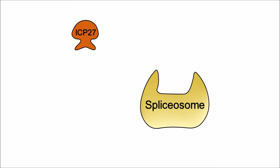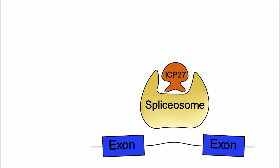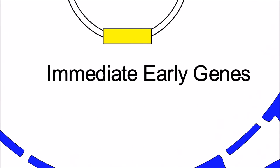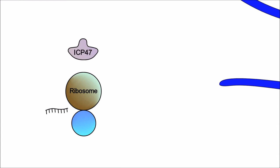Now we look at a second immediate early gene. This immediate early gene is called ICP47. The transcription of an immediate early gene occurs and then it is translated into the ICP47 protein. This protein then moves to the endoplasmic reticulum.